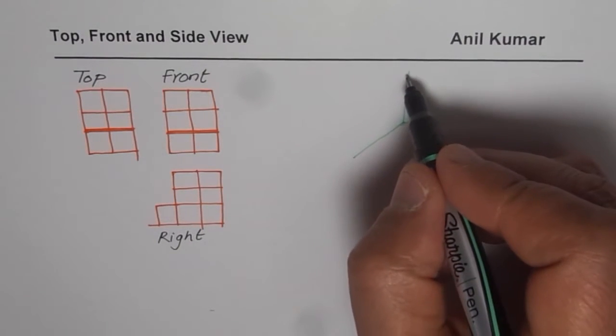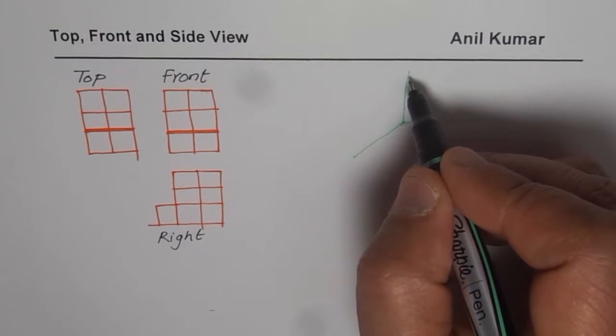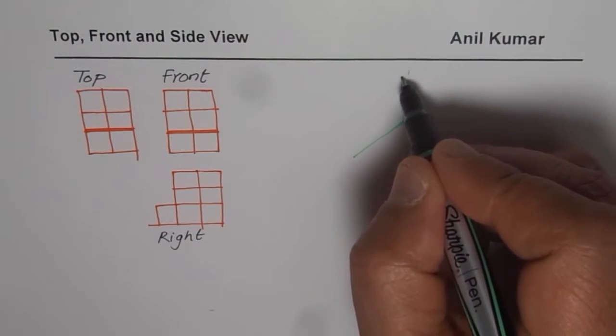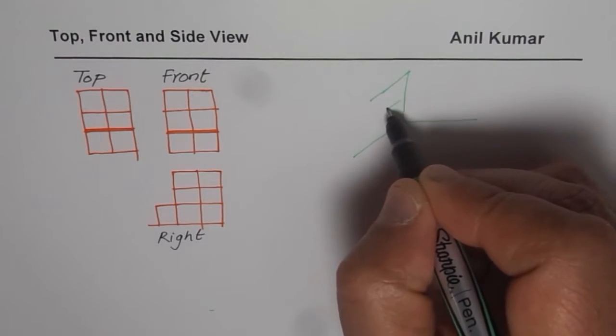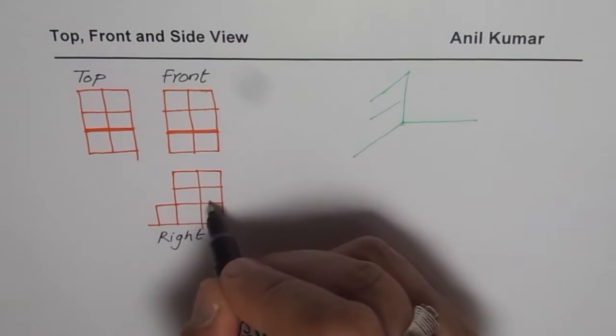We have two blocks, so if this is our top, we can say one and one, two, one and one, two. So this is two. These are our two blocks.